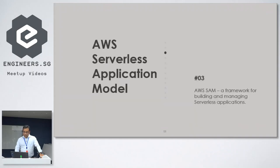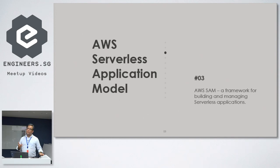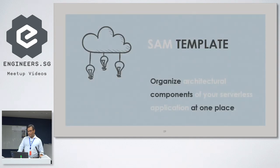Now we talk about AWS SAM. This is a framework for building and managing serverless applications. When you begin with serverless, there are lots of things. You begin with Lambda or you go to the UI. But I think you need a framework to make sense of it all. This is where the SAM framework, which comes out of AWS, helps. What is SAM? Basically it is two things: a template, and a CLI plus a set of tools which help you manage.